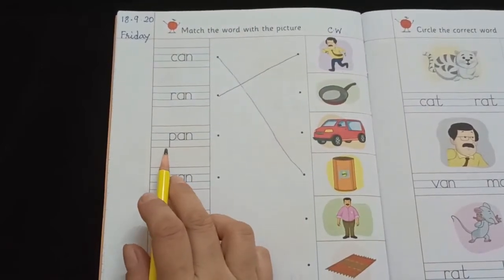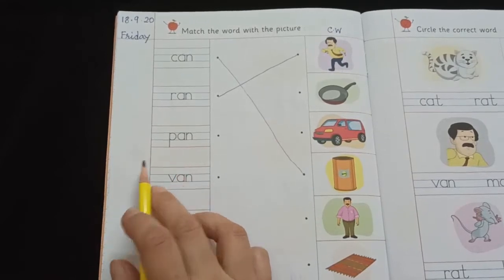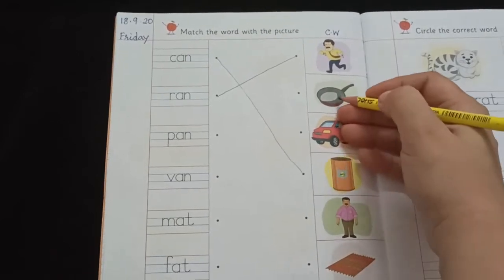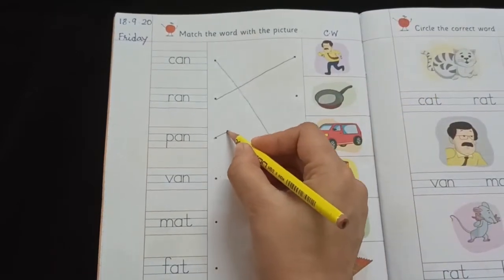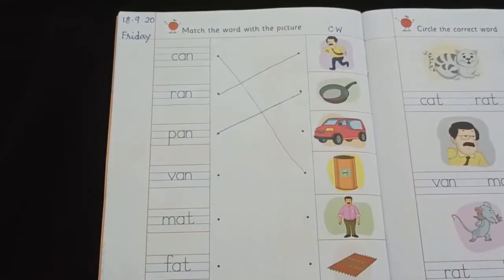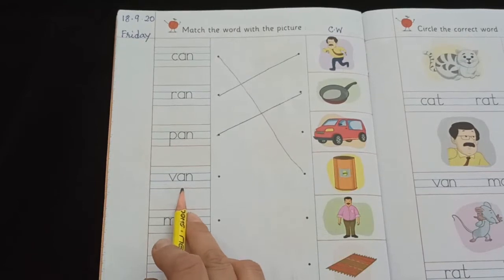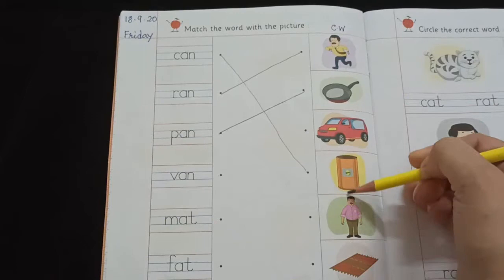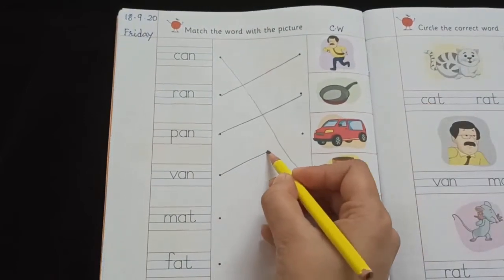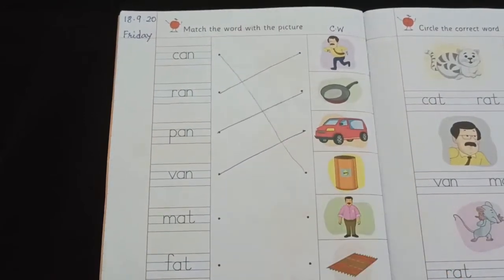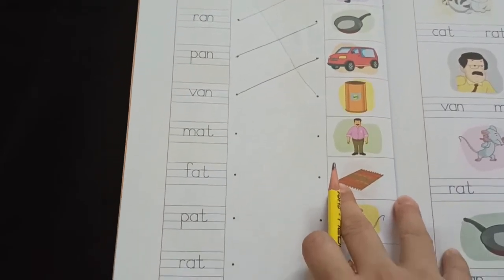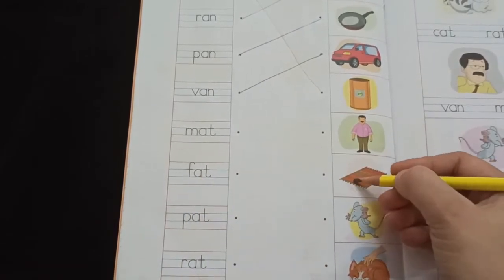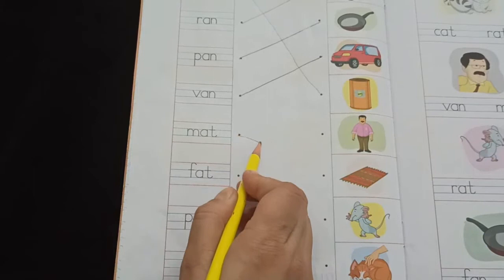Next word is P-A-N. And where is picture of P-A-N? Let's find picture of P-A-N. So just join them. Next word is V-A-N, Van. And where is picture of van? Yes. Van. Now the next word is M-A-T, Mat. Find the picture of mat. Yes. Let's join them.